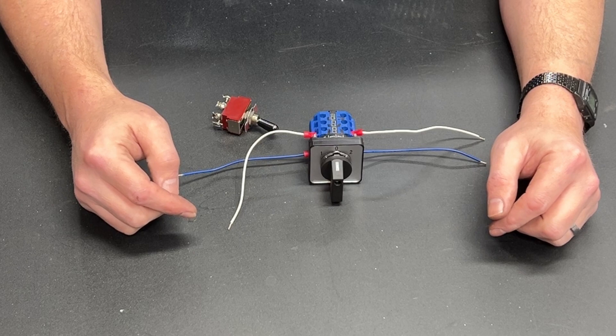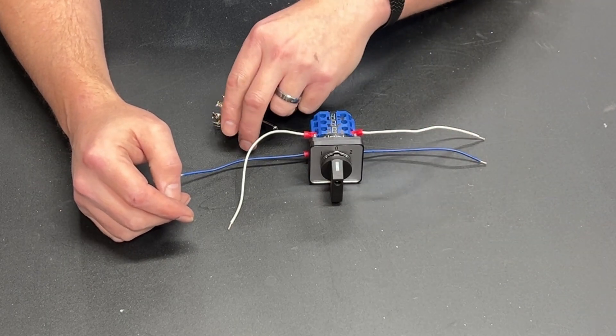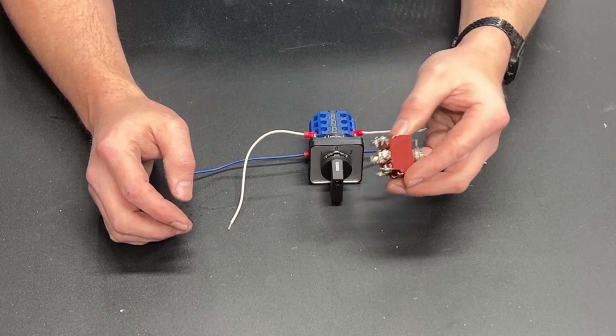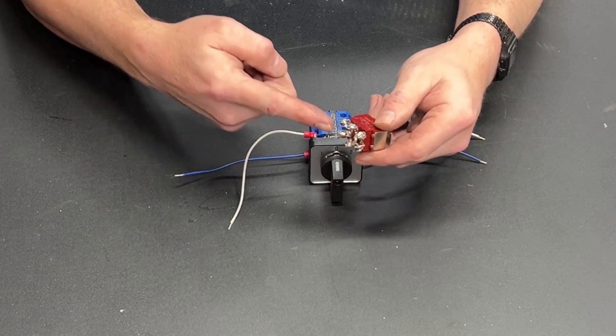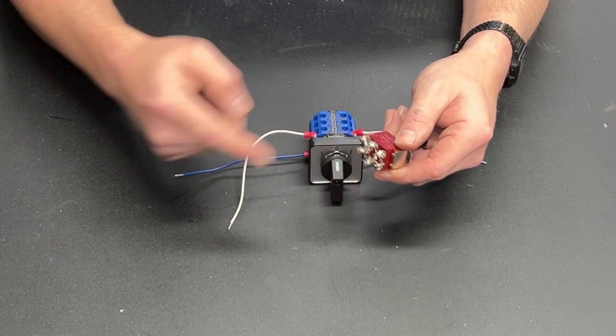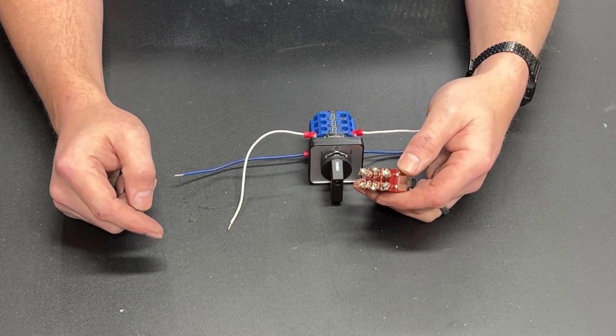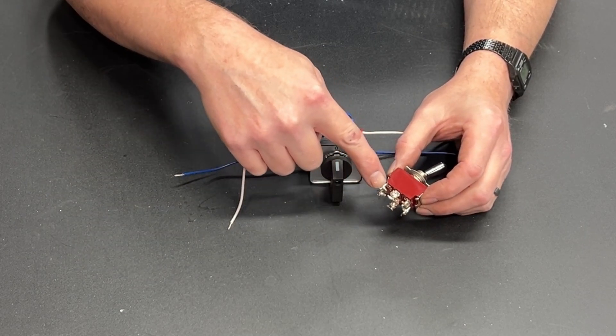Greetings fellow DIYer and welcome to my video. For those of you that don't know what a double throw switch is, this is a double throw switch. Actually this is a double pole double throw switch, but the double pole just means that we have two rows of wiring for basically two different switches that are switched at the same time. For the purpose of this video we are just going to look at one half.